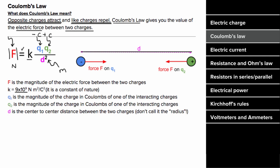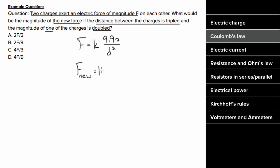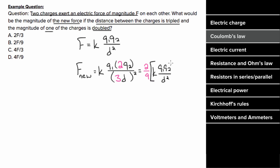For the Coulomb's Law example: two charges exert an electric force of magnitude F on each other. What is the new force if the distance is tripled and the magnitude of one charge is doubled? The new electric force becomes K times Q1 times 2Q2 divided by (3d) squared. This gives a factor of 2 on top and 9 on the bottom. Pulling out those extra factors gives a new force of two-ninths times KQ1Q2 over d-squared, which was the original force F. So the new force is two-ninths of F.